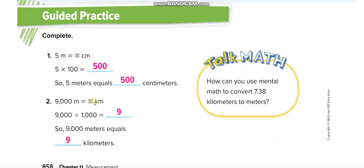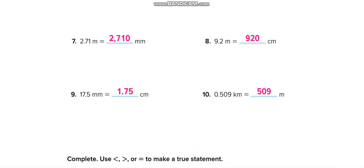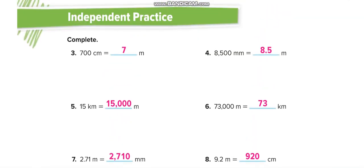One kilometer is 1000 meters, so 9000 meters divided by 1000 — because we are converting from a smaller unit to a larger one — gives us 9 kilometers.